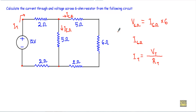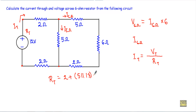Let me calculate the total resistance RT with respect to these two terminals. The 5 ohm, 6 ohm, and 2 ohm resistances are connected in series: 5 + 6 + 2 = 13 ohm. Therefore the 13 ohm resistance will be in parallel with this 5 ohm resistor. So RT = 2 ohm + (5 parallel 13). The parallel combination 5‖13 gives 3.61 ohm, so RT = 3.61 + 2 = 7.61 ohm.